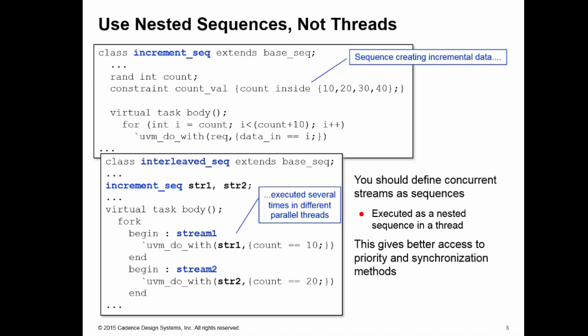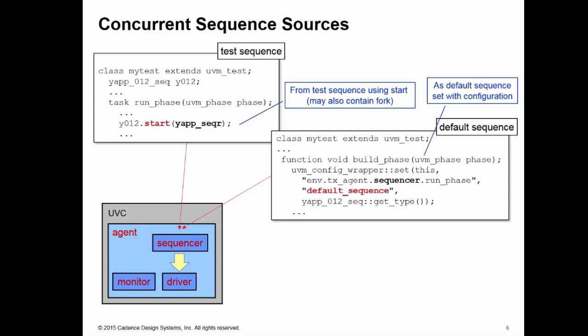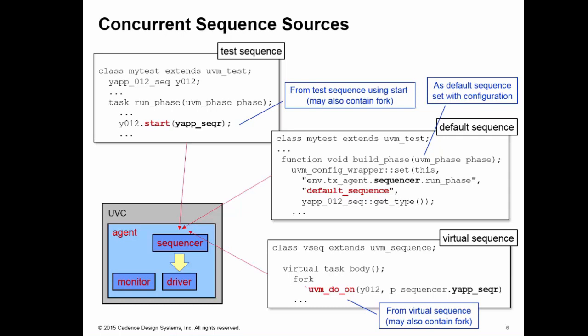Remember though, there's many different sources of concurrent activity for a sequence. For a given sequencer, we can be giving it data items from a test class using the start method call to execute a sequence on a sequencer. The test sequence may contain a fork block executing multiple sequence items. We can also tell a sequencer what to do using a configuration setting to set the default sequence property. We can also pass information down from a virtual sequence or a multi-channel sequence, which is using do on macros to execute sequences on that sequencer. The virtual sequence could contain fork join blocks executing multiple sequences on a given sequencer.